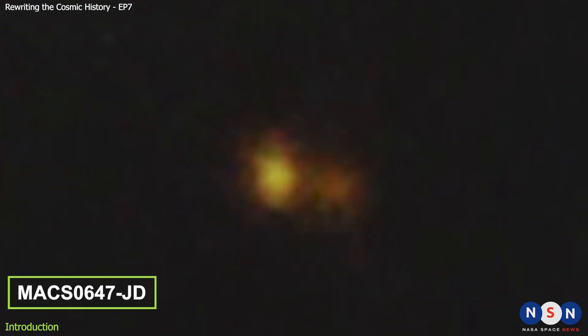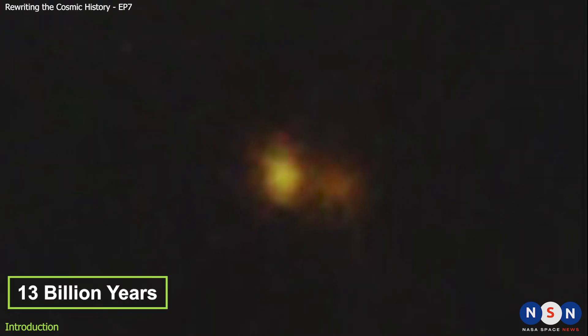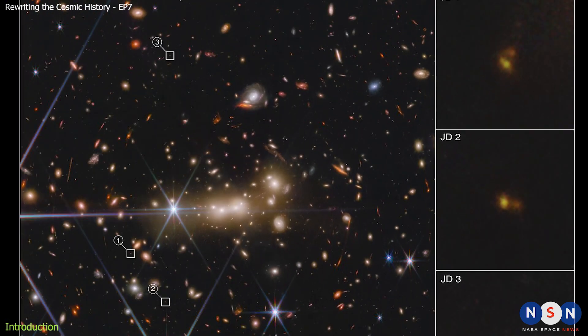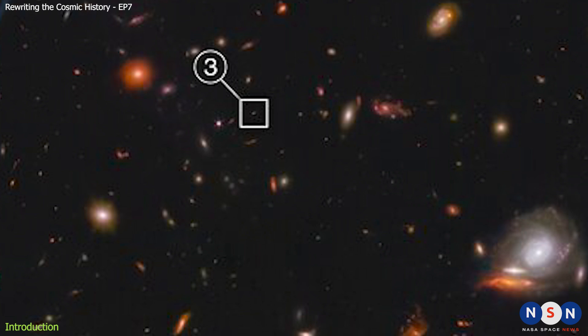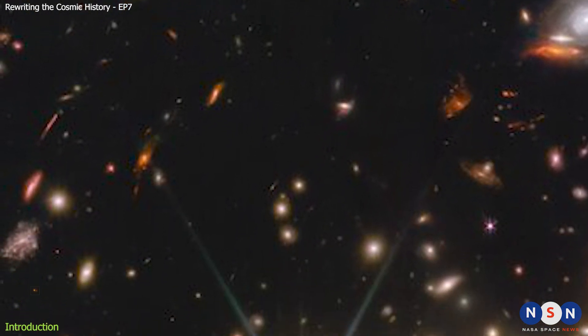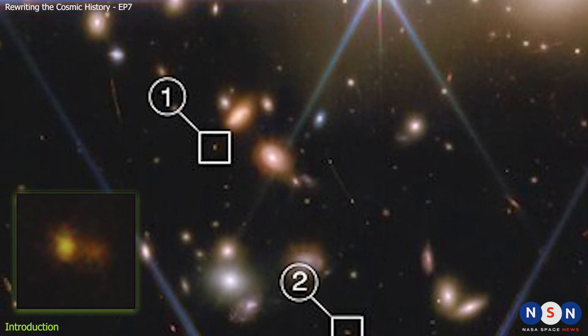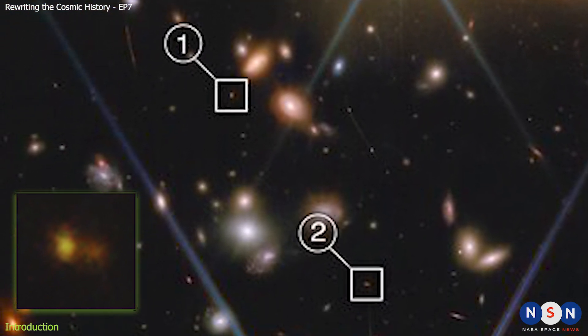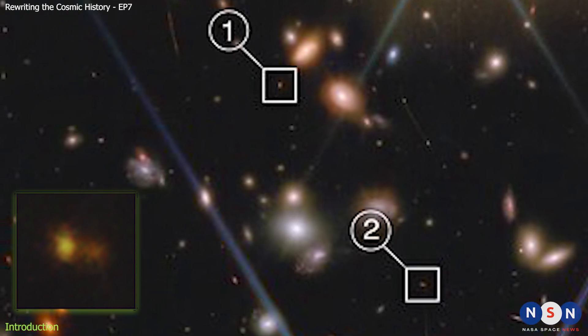This galaxy, called MAX 0647JD, or MAX JD for short, is one of the most distant and oldest galaxies ever seen, dating back to about 13 billion years ago. The James Webb Space Telescope also saw this galaxy not once, but three times in different locations on the sky, and within each image, it saw two objects with different colors and brightnesses. How is this possible, and what does this tell us about the history and evolution of galaxies?